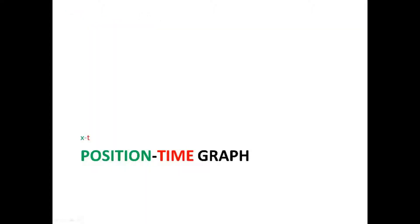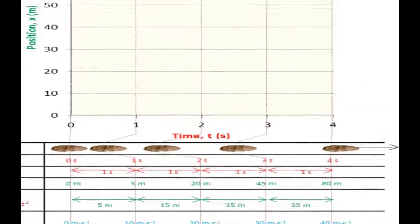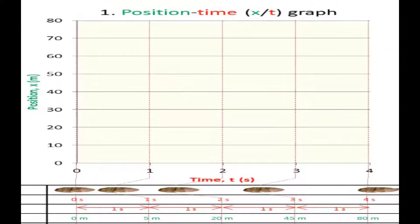Let's plot the data for position against time for this accelerated motion. At time 0 seconds, the stone is at 0 meters. At time 1 second, 5 meters. 2 seconds, 20 meters. 3 seconds, 45 meters. 4 seconds, 80 meters.